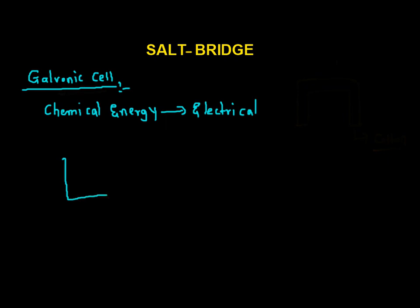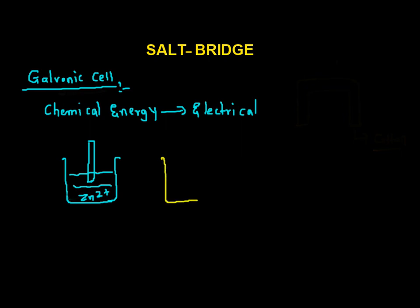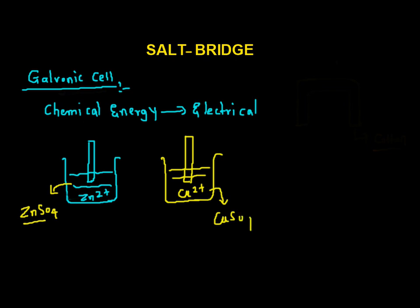Suppose in this compartment, this half cell, we have a zinc rod dipped into the zinc solution — a salt of zinc. And we have another compartment which is of copper, so in this we have a copper rod dipped into the solution of copper 2 plus. Here you can have zinc sulfate or zinc ion with any other anion, and here we have copper sulfate.